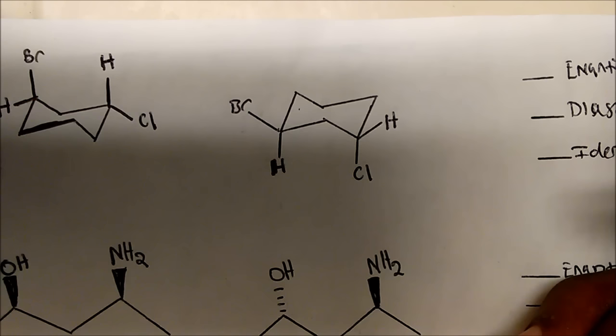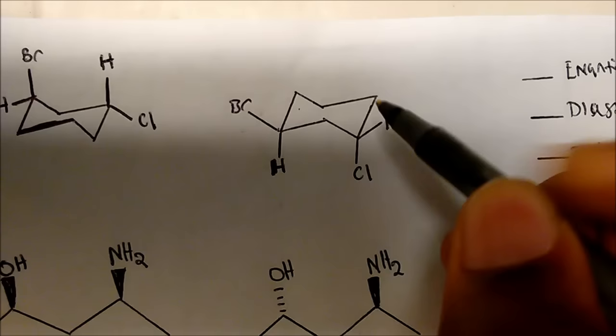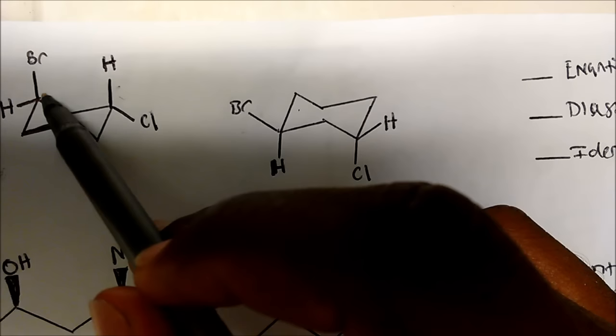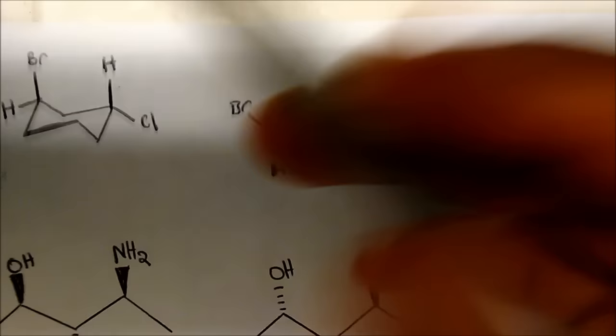On carbon one here, we have a chlorine that's going down. Carbon one, two, three, four, five — on carbon five, we have a bromine that's going up. So if we draw the actual flat structure of this molecule, we have a cyclohexane. On carbon one, the chlorine is going down, which means it's a dash. On carbon five, the bromine is going up, which means the bromine has a cis relationship to it.